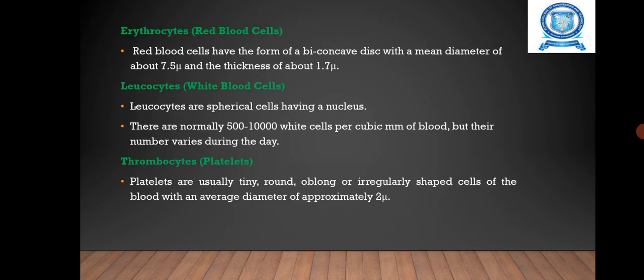First we are going to see the red blood cells. They have the form of a biconcave disc with a mean diameter of about 7.5 micrometers and thickness of about 1.7 micrometers. The next one is white blood cells. These are spherical cells with a nucleus, and there are normally 500 to 10,000 white cells per cubic millimeter of blood, but their number varies during the day.